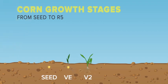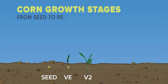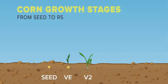The V2 stage occurs when two leaves are fully emerged with collars visible. The V2 stage occurs typically 7 to 10 days after emergence or around 200 GDUs.